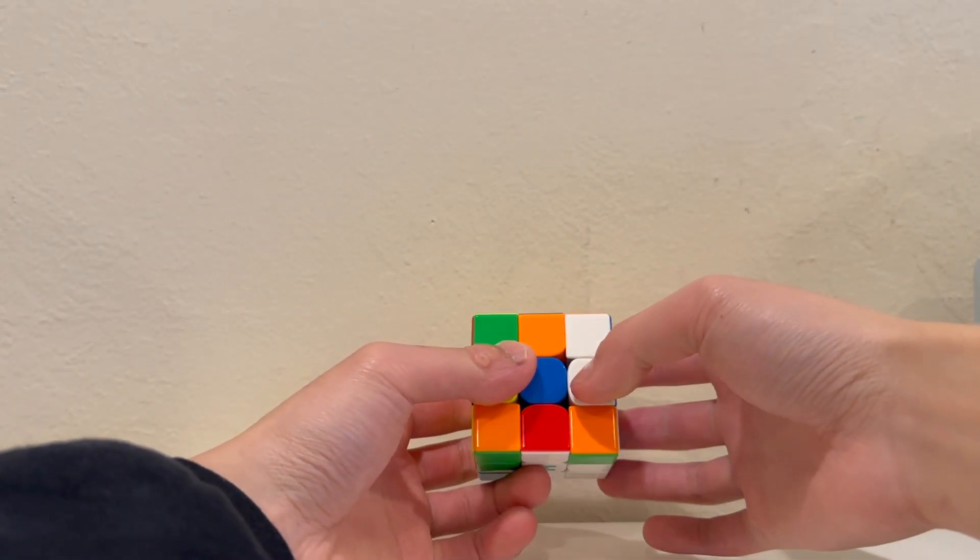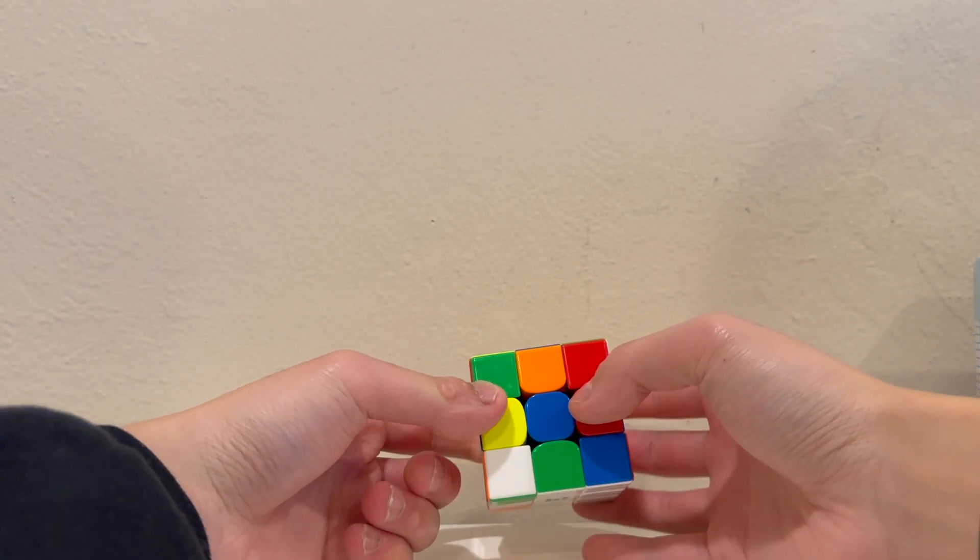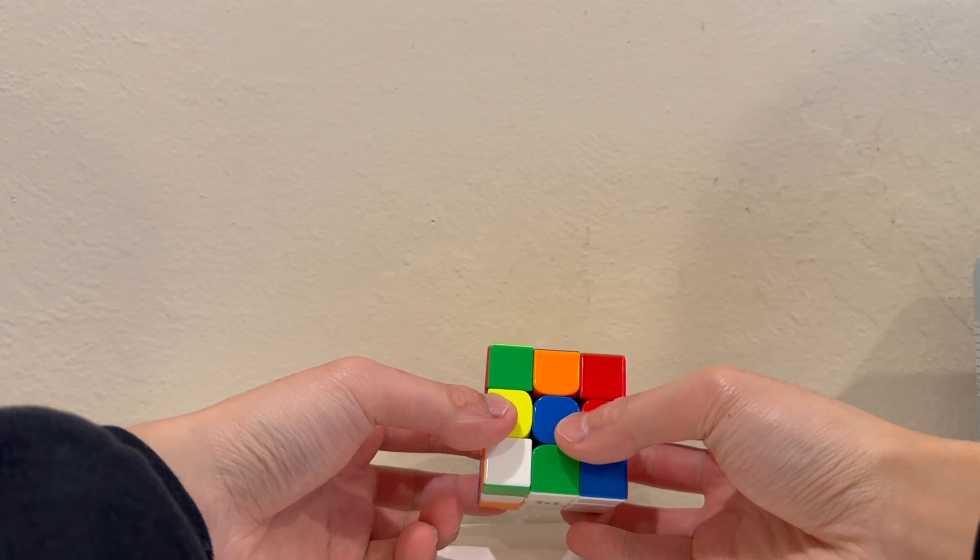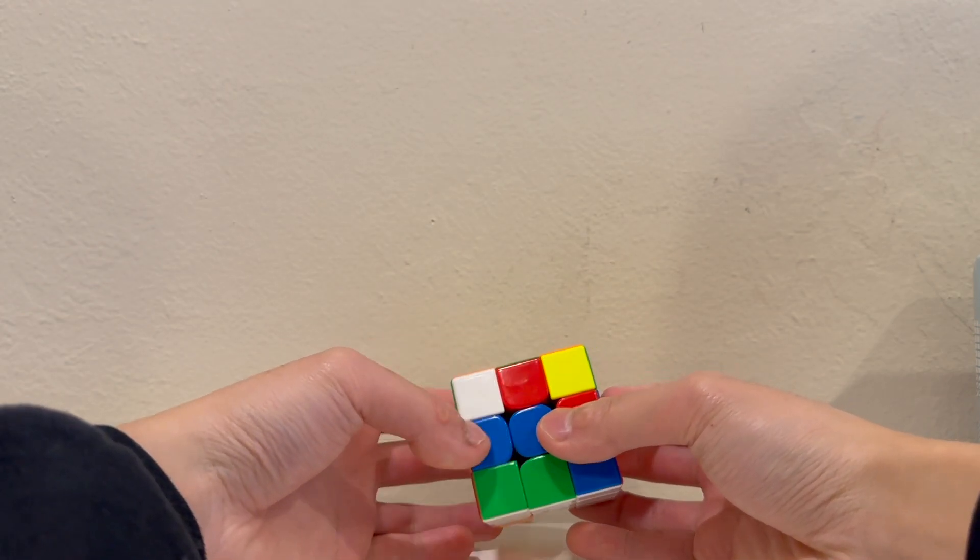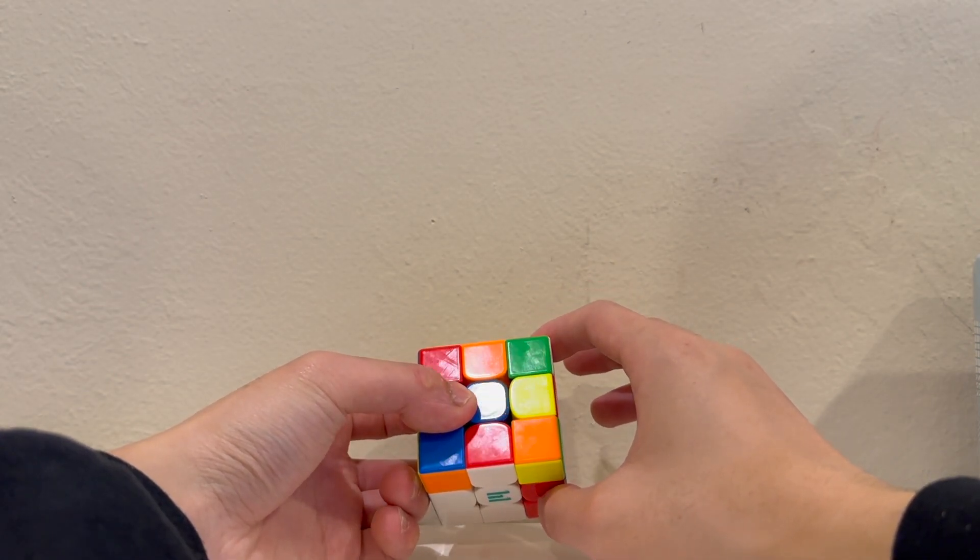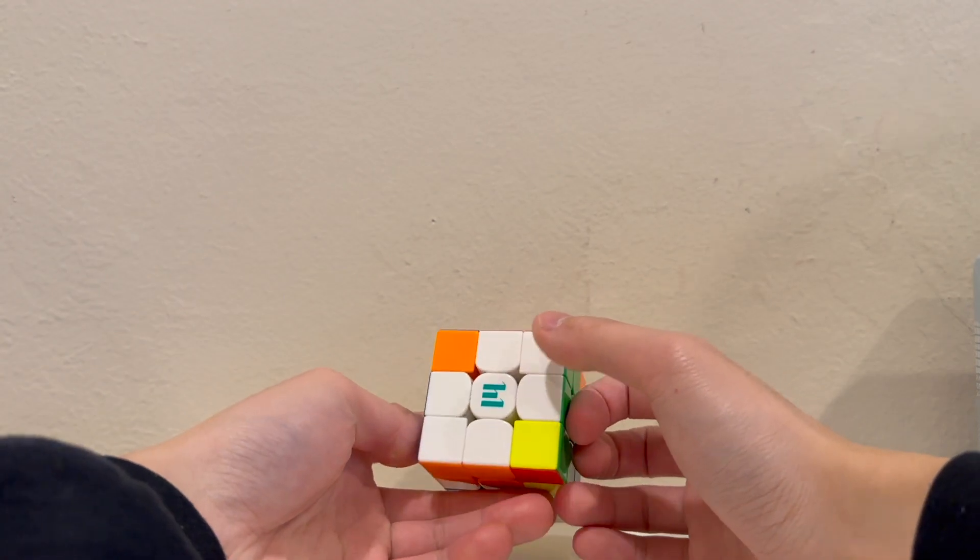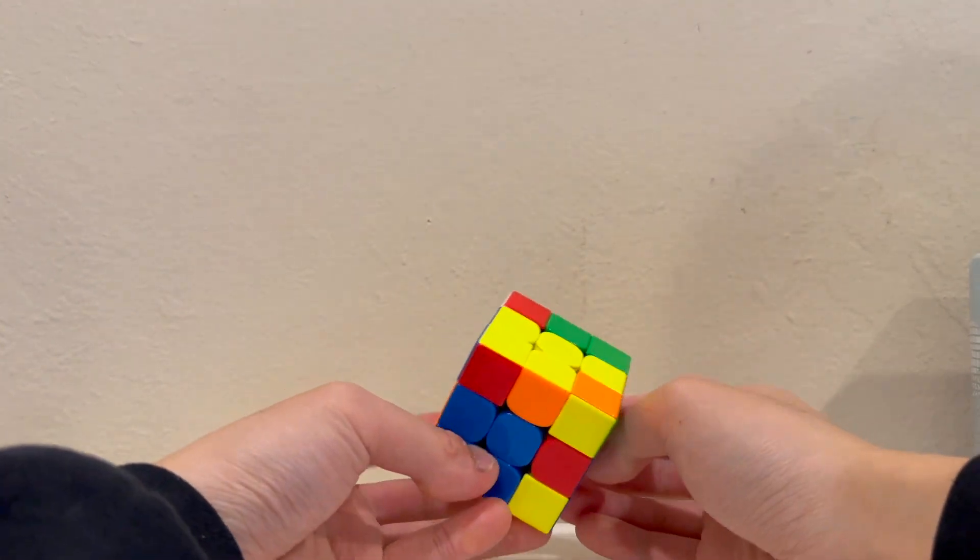He did r prime d2 r prime d and he did l prime u l d r prime u prime r d and he solved double x cross. Two f2l pairs solved.